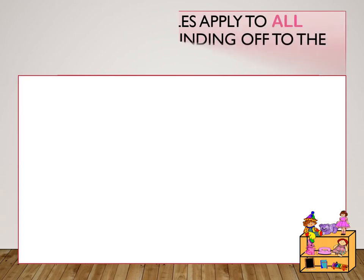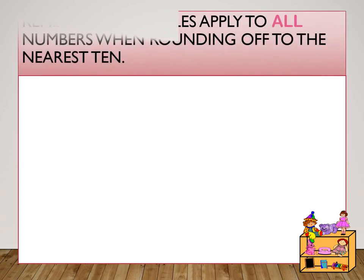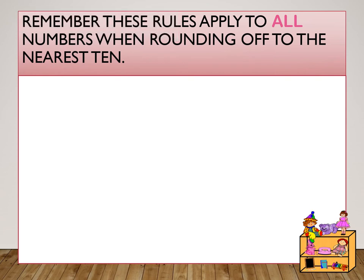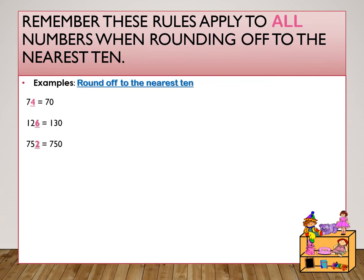Remember, these rules apply to all numbers when rounding off to the nearest 10. Here are some examples: 74 is equal to 70. 752 is equal to 750. 1,324 is equal to 1,320.